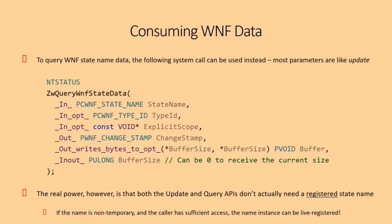The real part of WNF is that for consuming or querying data, the name doesn't yet have to be registered — unless it's a temporary name. For persistent, permanent, or well-known names, even if not yet registered, you can still publish data to it. The kernel allocates a buffer associated with that name so when the publisher or consumer comes in later the data is already there. Temporary names are the exception since they're based on a sequence number that resets at boot.